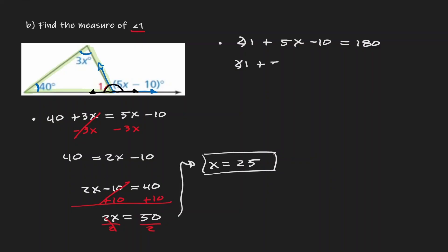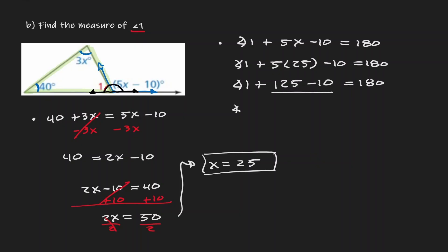X equals 25, but this does not mean angle 1 is 25. Angle 1 and the expression 5X minus 10 form a straight line, so they are supplementary and sum to 180 degrees. Angle 1 plus 5 times 25 minus 10 equals 180. That gives angle 1 plus 125 minus 10 equals 180, so angle 1 plus 115 equals 180. Subtracting 115, angle 1 is equivalent to 65 degrees.